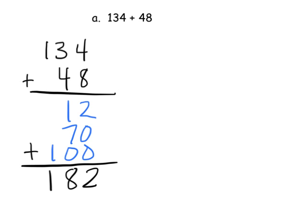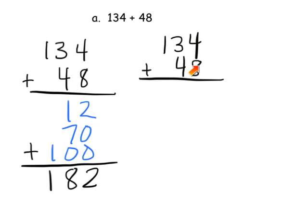Another way we could do it is 134 plus 48 using more of the standard way. We've got 4 plus 8 is 12, so that's 2 — carry the 1, or bundle 10 of those together into the tens column. Then 3 plus 4 plus 1 is 8, so that's 80 — put an 8 in the tens column. And then 100 plus nothing gives us 100, so our answer is 182.